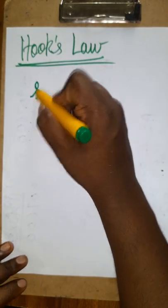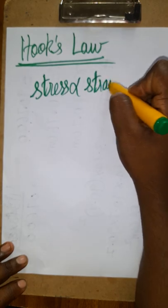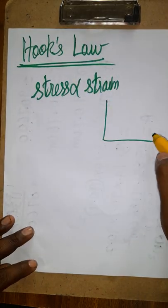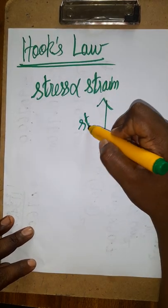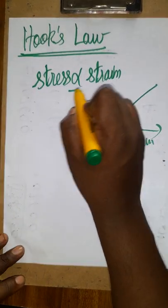Today we are going to see what is Hooke's Law. Hooke's Law is defined as stress is directly proportional to strain. More stress will offer more strain. Stress and strain will be directly proportional, and we will get a straight line.